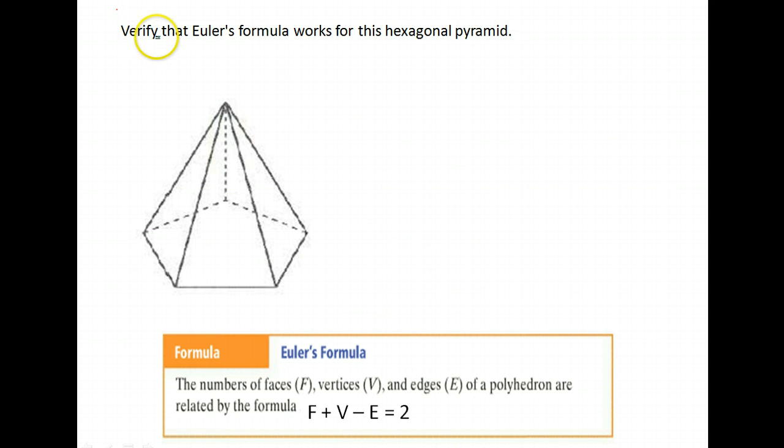Here's another example. It says to verify that Euler's formula works for this hexagonal pyramid. So it's a pyramid with a hexagon, or actually this is a pentagonal pyramid. That's the wrong word there because it has a pentagon on the bottom.